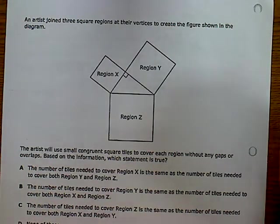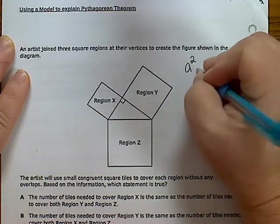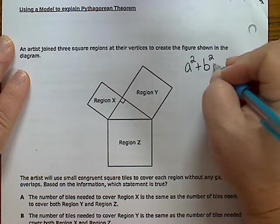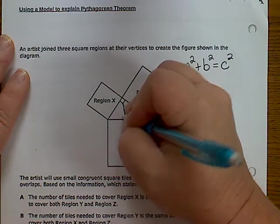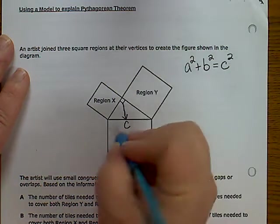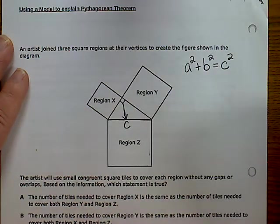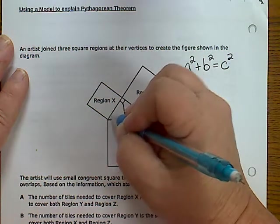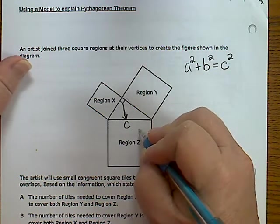Last thing. And some of you will get this and some of you won't. Remember, using a model to explain Pythagorean theorem. Remember that Pythagorean theorem says the square of the side A plus the square of side B equals the square of side C. So remember that let's look at this. And now I know that region Z is C. This side is C. This region is C squared. So if I added this side length squared plus this side length squared, it would equal this side length squared. Let's see what our answers say.